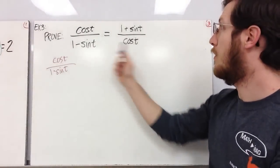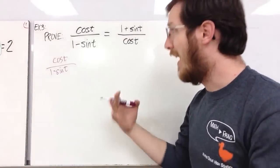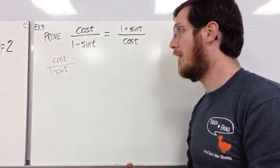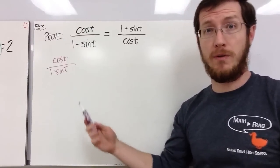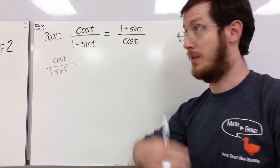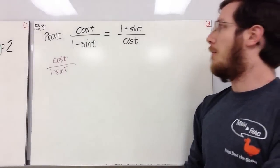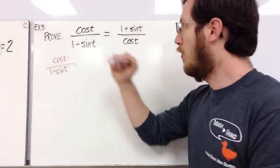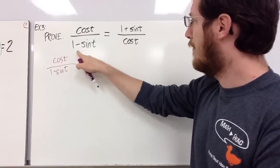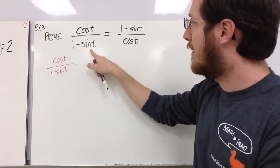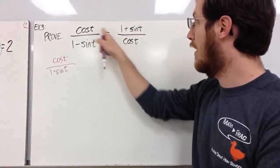This one is tricky. Just looking at it for the first time I wouldn't see which direction to go, but having practiced these — and the best way to master trig proofs is to practice over and over again proving these trig identities — I see a similarity: I've got (1 − sin t) on the left and (1 + sin t) on the right, and cosine appears in both.